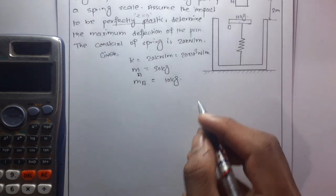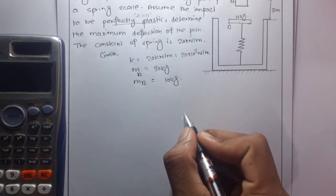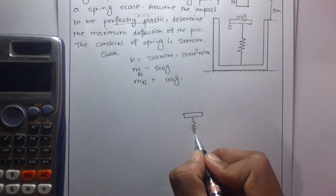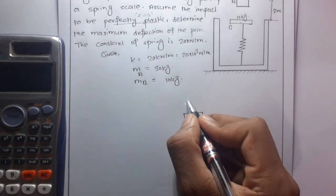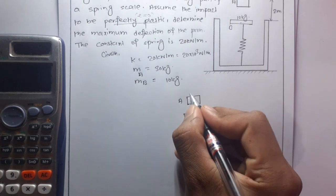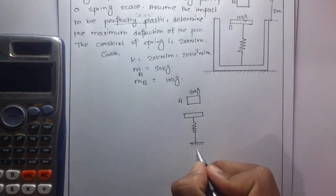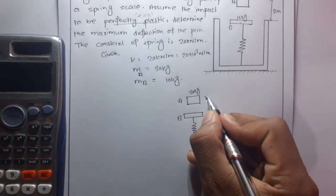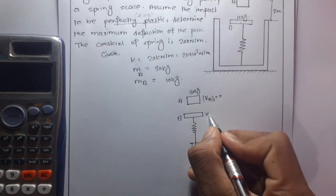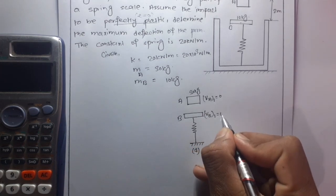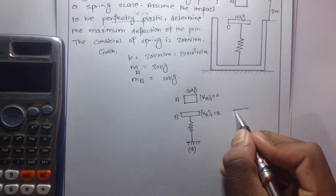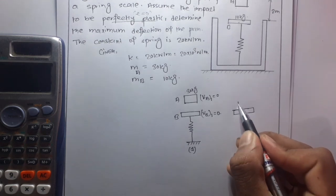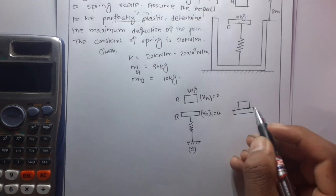At the initial condition, we have the pan with a spring attached, and the 30 kg block above it. This is position one. Initially they are all at rest, so vA1 is equal to zero and vB1 is equal to zero. After some time, block A is dropped to the pan.